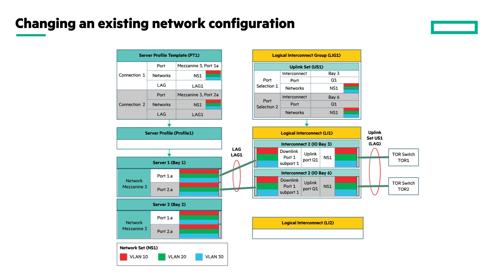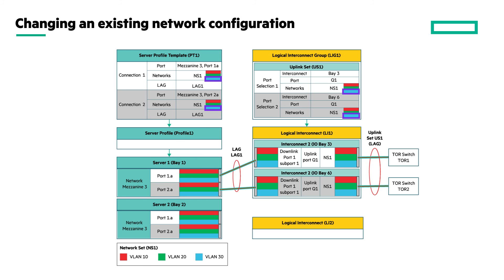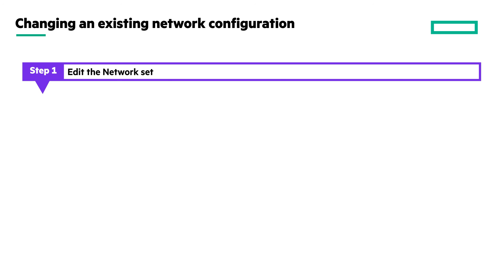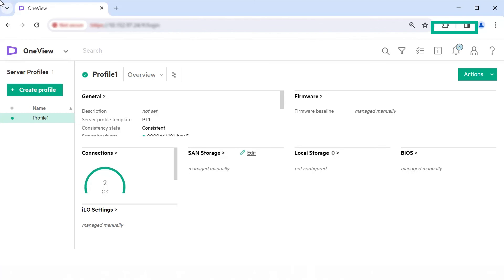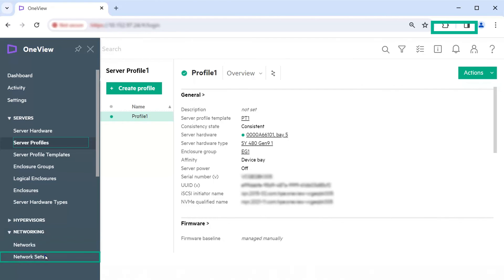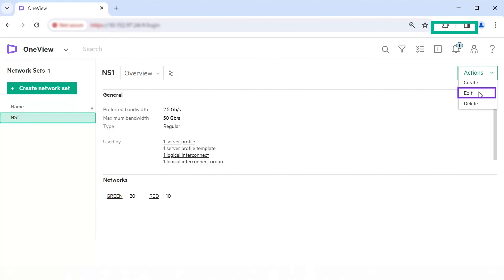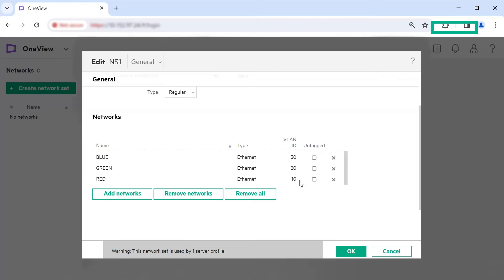If you want to add or remove networks to the existing network configuration, edit the network set. Any changes you make to the networks are reflected in the uplink set and connections. In this use case, we are adding the blue network to the existing network set NS1. Here are the steps to change the existing network configuration: edit the network set and update the networks, then verify the changes to the network configuration in the uplink set. From the main menu, select Networking, Network Sets. In the list pane, select NS1. Click Actions, Edit. Click Add Networks. Select the blue network from the list and click Add. Click OK.